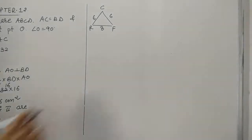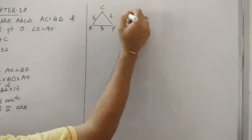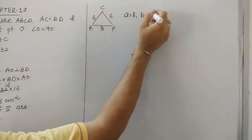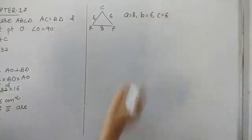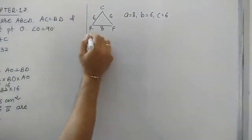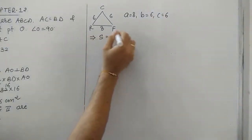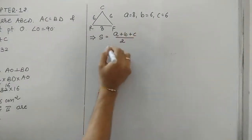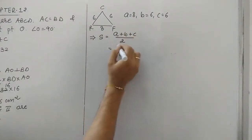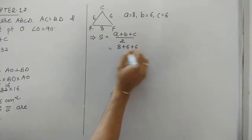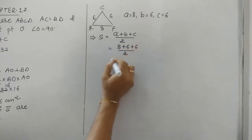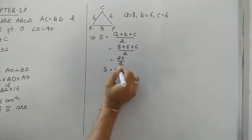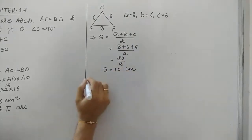Let's find out the area of triangle CRF. Side a is 8, b is 6, and c is 6. Using Heron's formula, we first find the semi-perimeter s, which is the sum of all sides divided by 2: 8 plus 6 plus 6 equals 20, so s equals 10 centimeters.